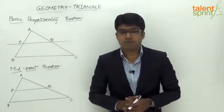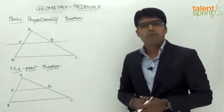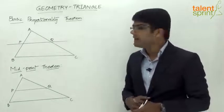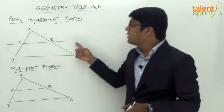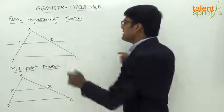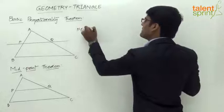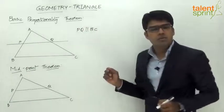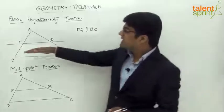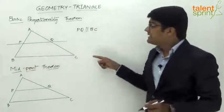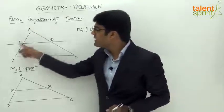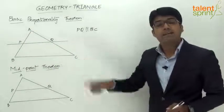Let's understand this with the help of a simple illustration. ABC is a triangle, and there is a line PQ which is parallel to the side BC. As per the Basic Proportionality Theorem, if we draw a line parallel to one of its sides, that line will divide the other two sides — AB and AC — in the same proportion.